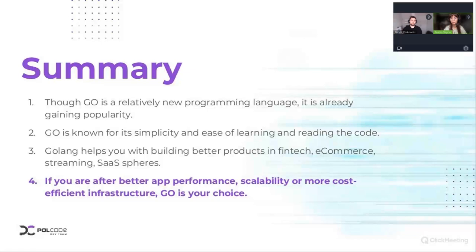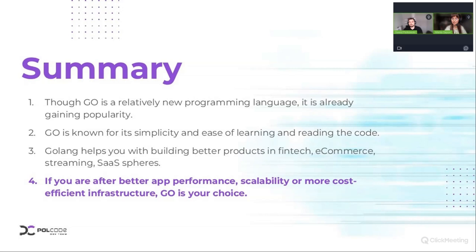With that being said, I'd like David to smoothly go into the summary. So I would like to summarize: first, as we said before, Golang is a relatively new programming language, but it's still gaining popularity in big tech companies and small businesses, and the community is still growing. It's growing also because of its simplicity and how easy it is to learn and read the code. Golang can help you build any products — as you can see on the screen, like FinTech, e-commerce, streaming platforms, software as a service, and many others.